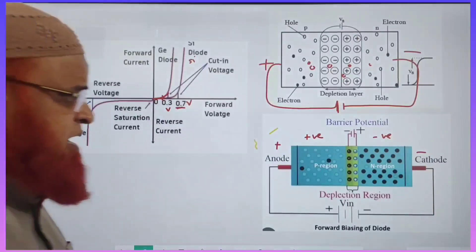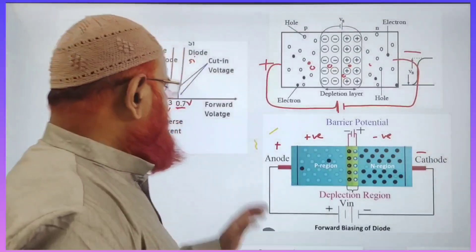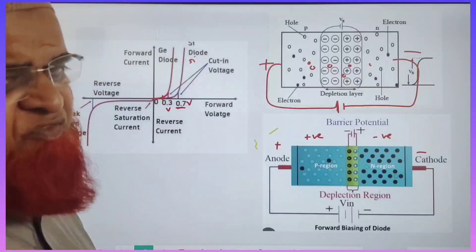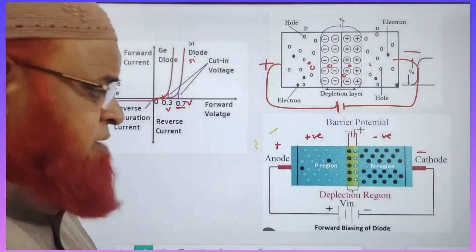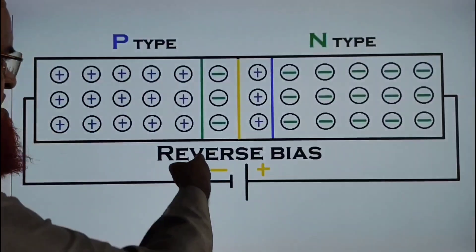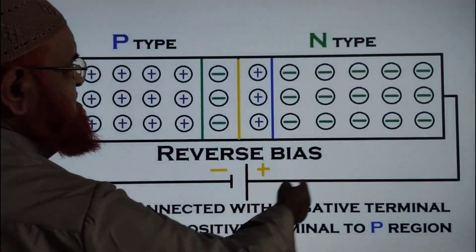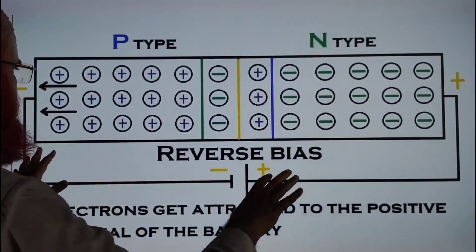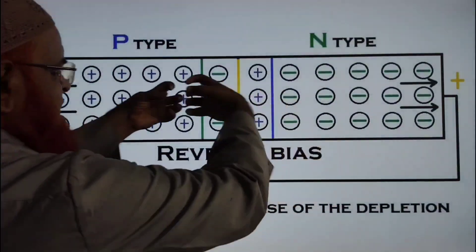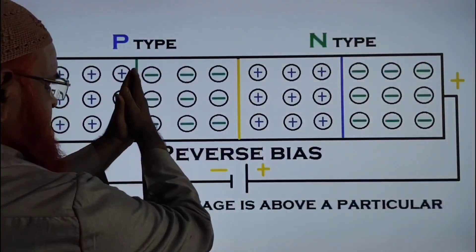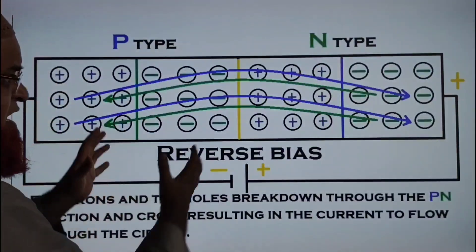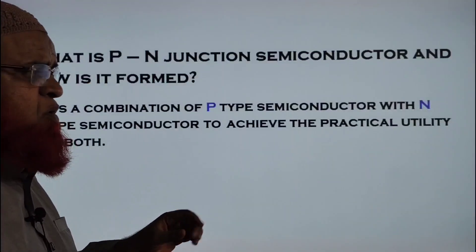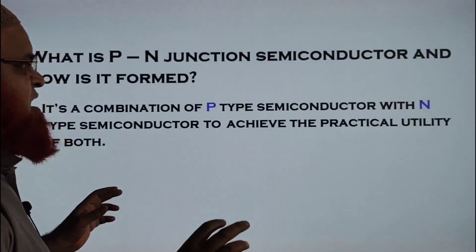Once you understand this concept, it is very easy to understand the problem. This is called reverse bias. Reverse bias means positive is connected to negative, negative is connected to positive. Ions will move and depletion layer size will increase. There is no transfer of electrons and holes. No current flows.